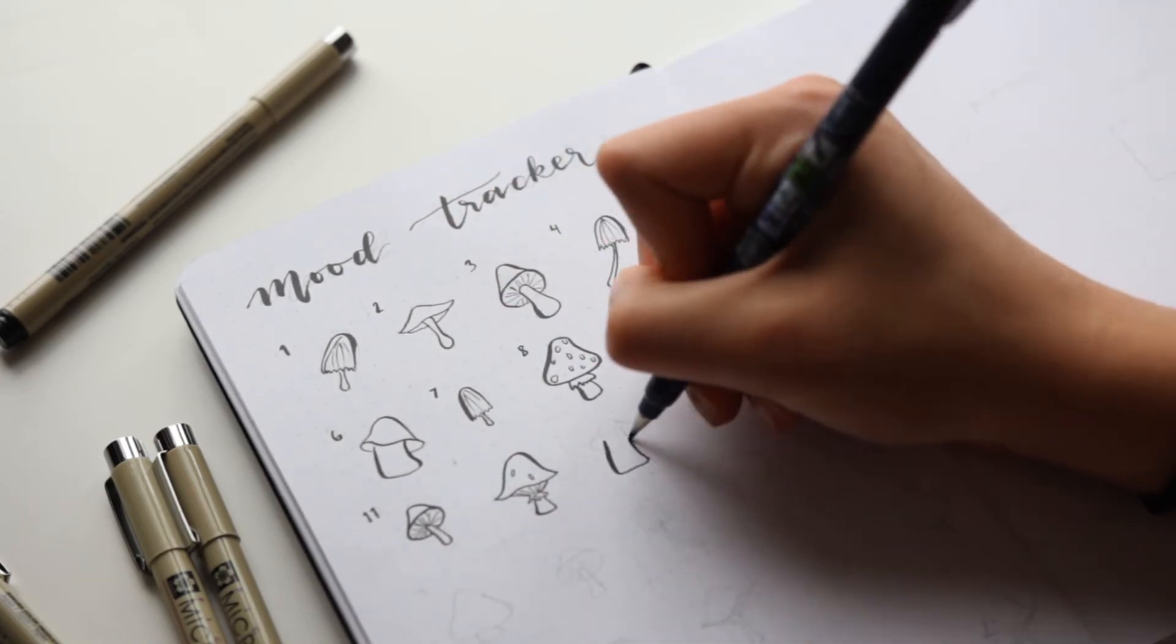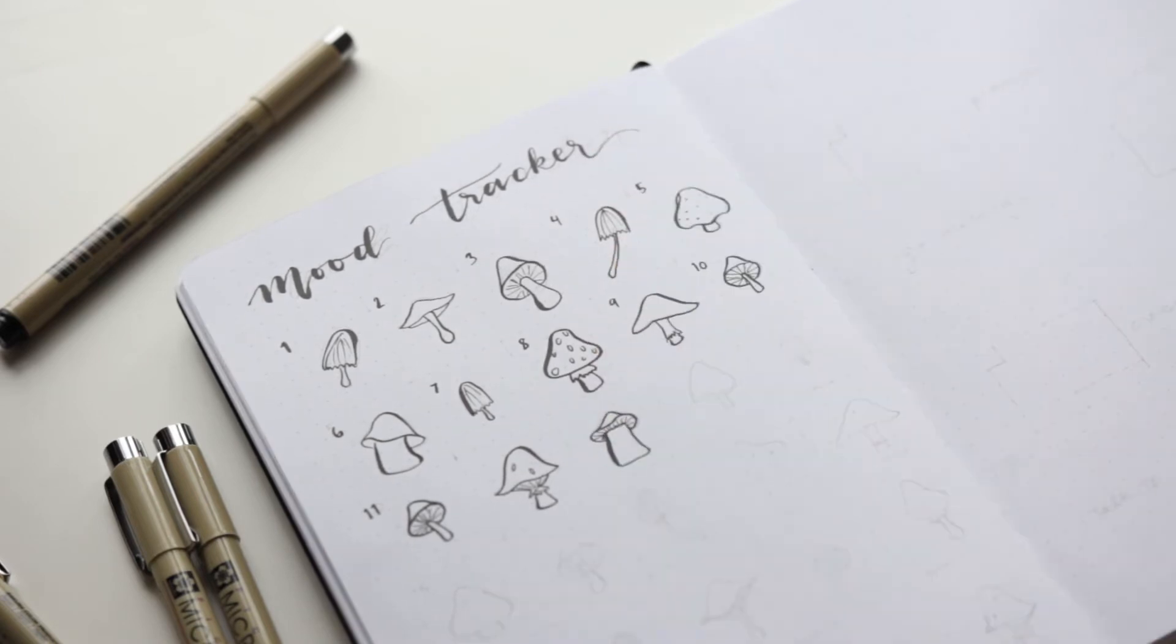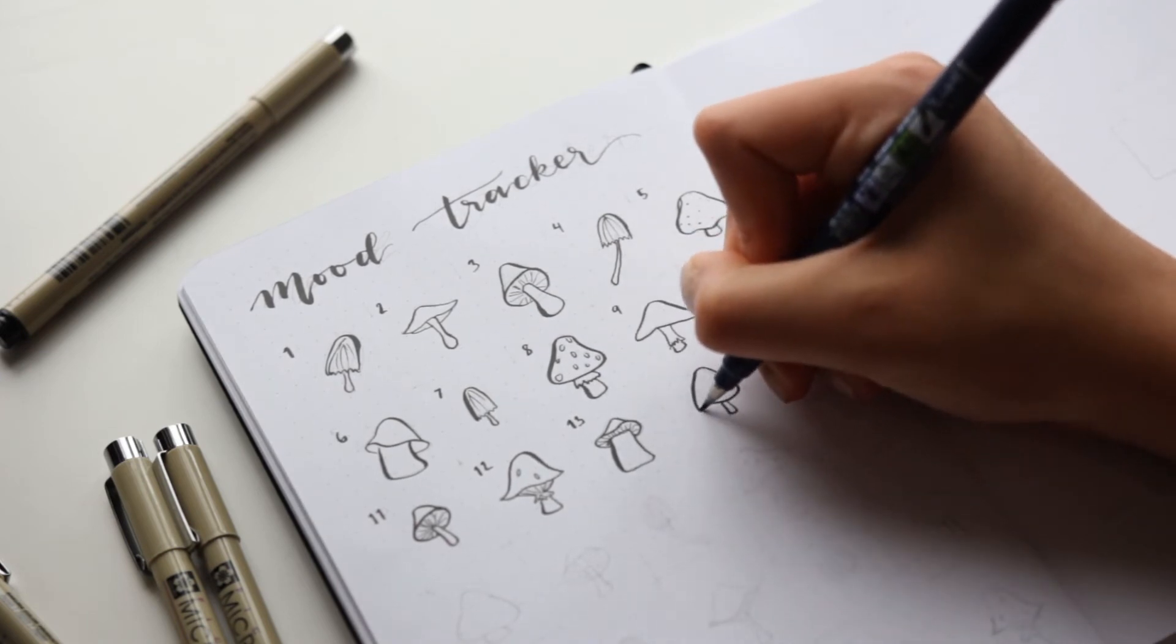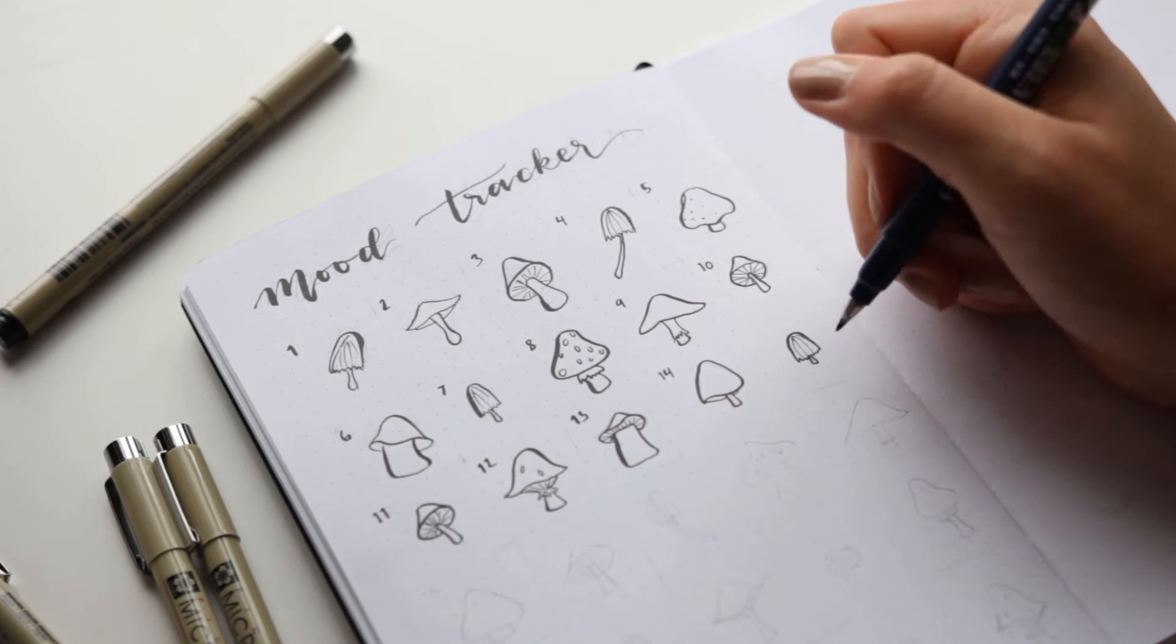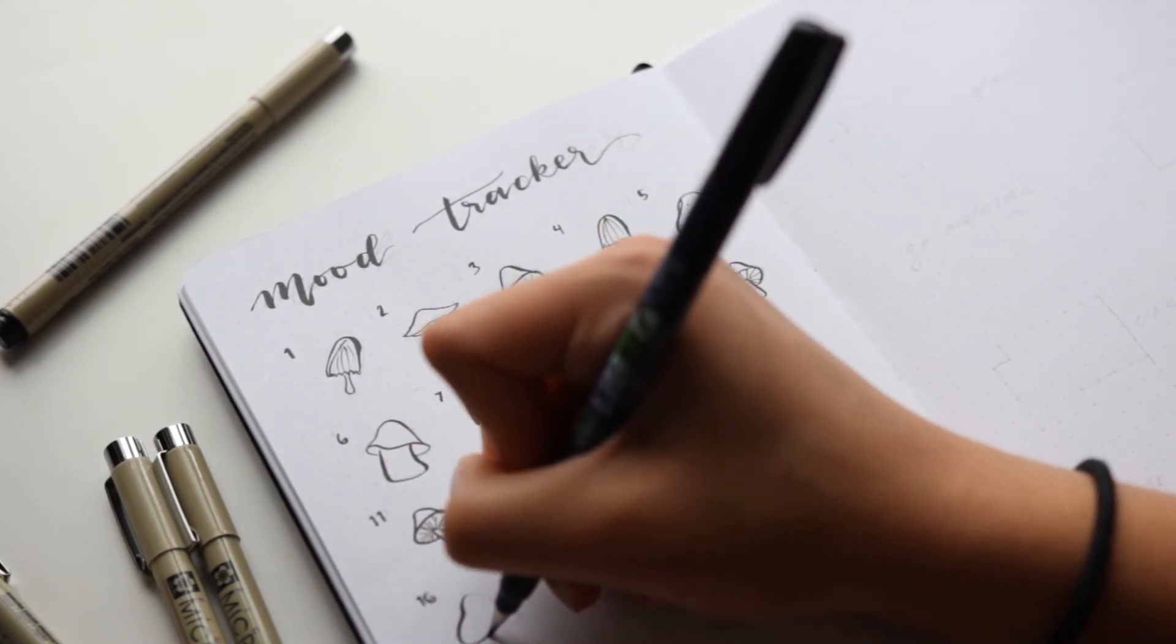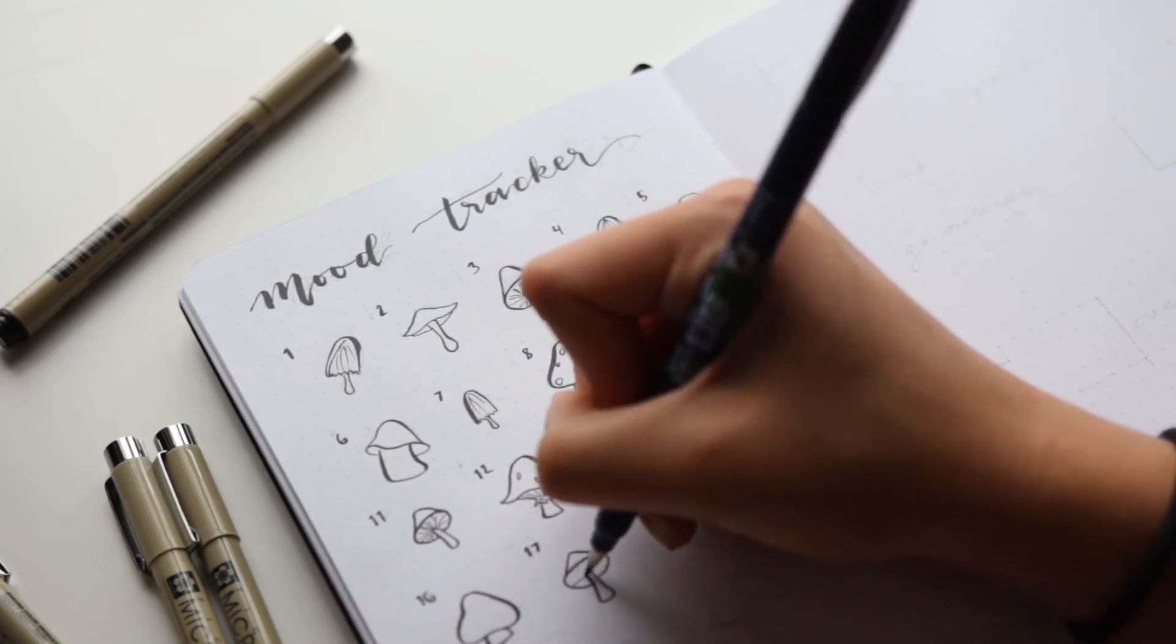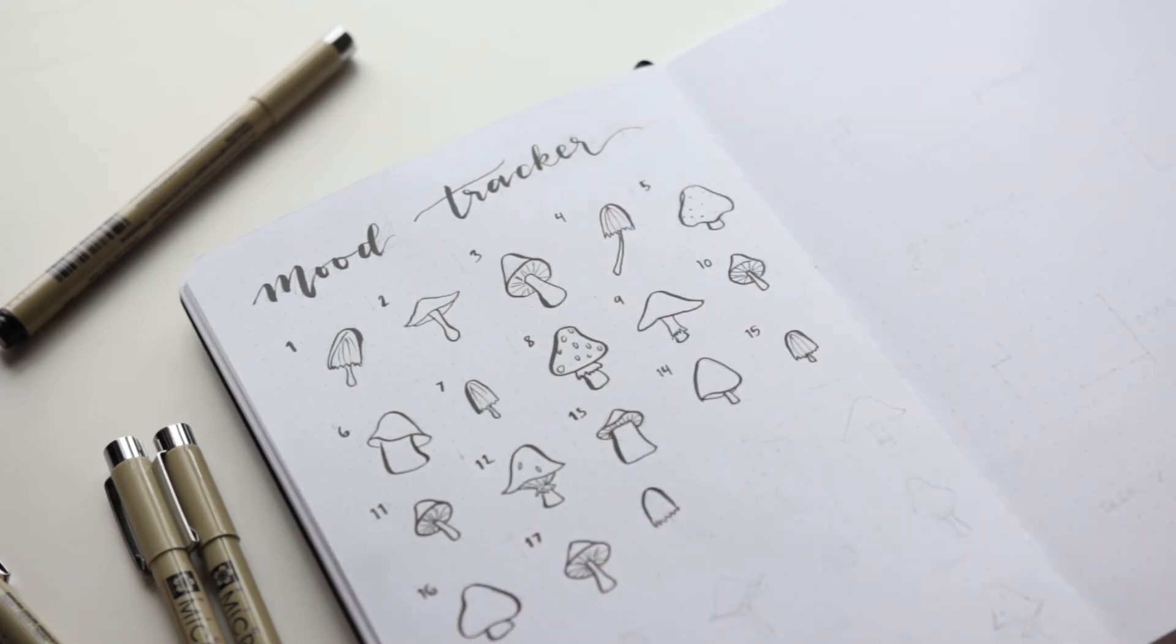It was a little tedious, but tracing over all the pencil with my Tombow Fudenosuke pen was so satisfying because the pen is made for calligraphy. I'll link it in the description if you're curious. But that means that if you apply pressure, it just really easily makes a thicker line. And I think that gives it such a professional cartoony look, which I absolutely love.